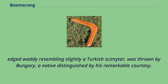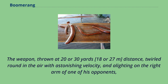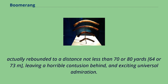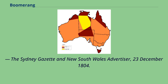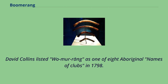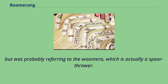The weapon, thrown at 20 or 30 yards (18 or 27 metres), twirled round in the air with astonishing velocity, and alighting on the right arm of one of his opponents, actually rebounded to a distance not less than 70 or 80 yards (64 or 73 metres), leaving a horrible contusion behind — as reported in The Sydney Gazette and New South Wales Advertiser, December 23, 1804. David Collins listed 'Womarang' as one of eight Aboriginal names of clubs in 1798, but was probably referring to the Womara, which is actually a spear-thrower.